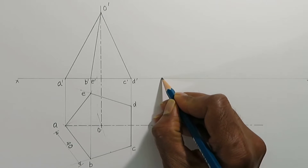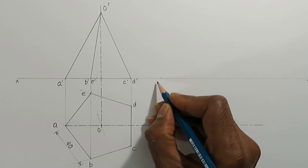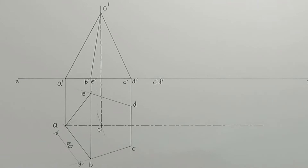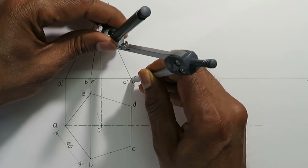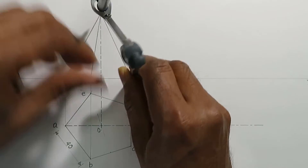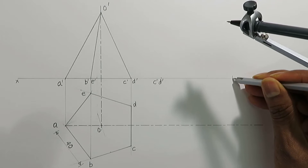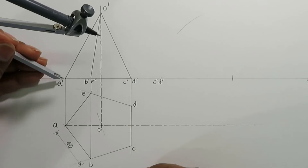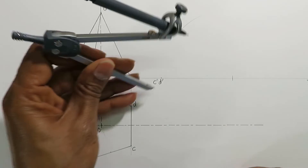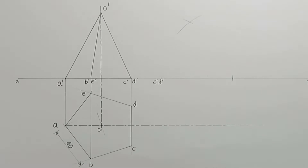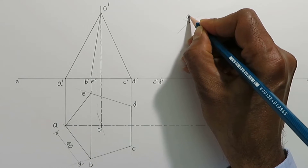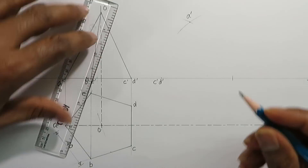Now we will rotate the front view such that the triangular face OCT is on the HP. This means that the O prime C prime and O prime D prime edges will be on the reference line. Locate the points C prime and D prime on the reference line — they coincide with each other. Bring the O prime C prime length using the compass to the reference line. Now also bring other edges of the front view to reconstruct the front view in a tilted way. This new position represents the pyramid lying on one of its triangular faces.